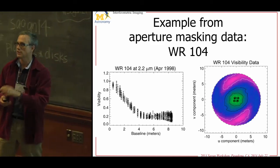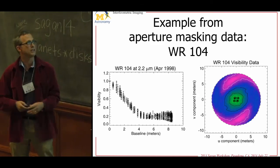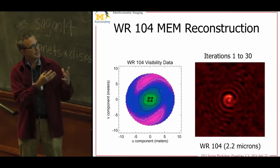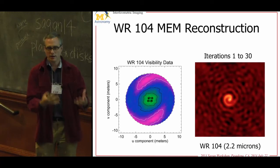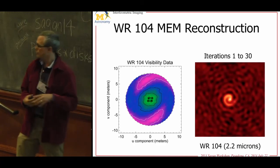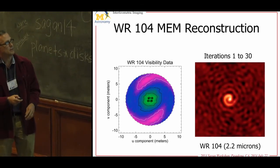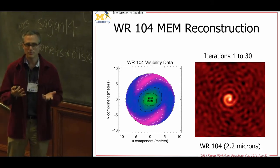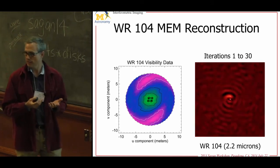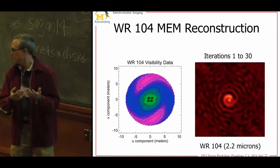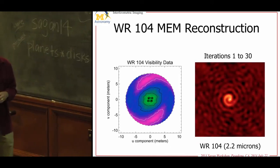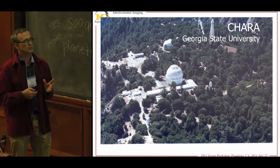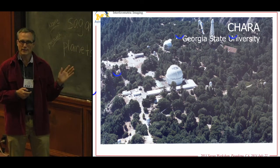When you put it into the maximum entropy routine and do a forward transform starting with a delta function, letting it go towards a solution, you see iterations improving chi-square using the regularizer. At the end you get a spiral structure — the discovery of pinwheel nebulae around Wolf-Rayet stars — something you couldn't know before, only visible with high-resolution imaging.